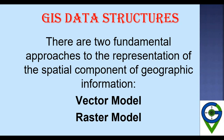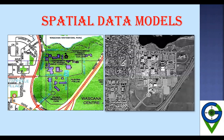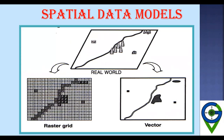In GIS, we are basically dealing with two types of models: the vector model and the raster model. The spatial data models include the raster grid, or raster data model, and the vector. The real world can be displayed using either of the two formats — raster or vector.